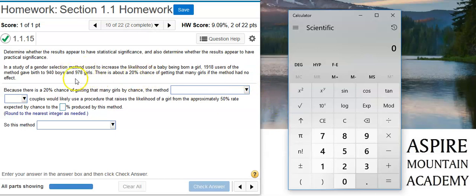The proportion of girls in the sample is going to be the number of girls divided by the total number of births. So here I'm getting almost 51%.